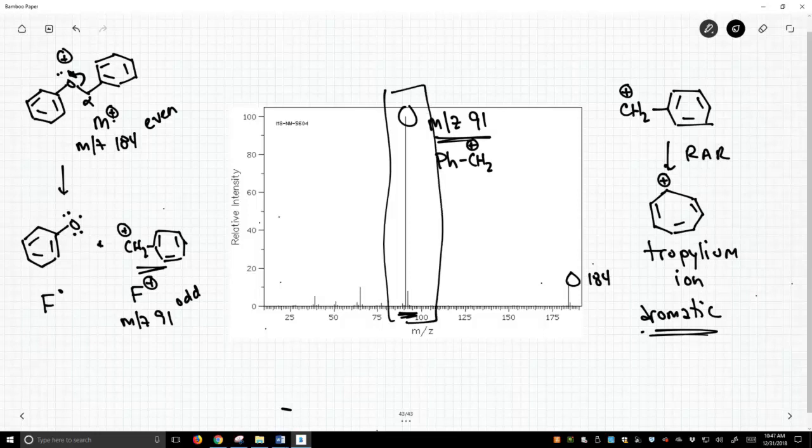So typically, if a molecule can lose a CH2 phenyl, it will rearrange to this tropilium ion structure, and you'll see it as the most prominent peak in the spectrum. And we call that the base peak. Not always, but very often.